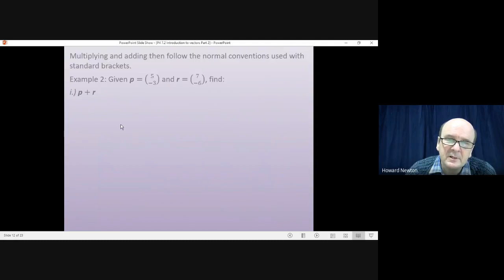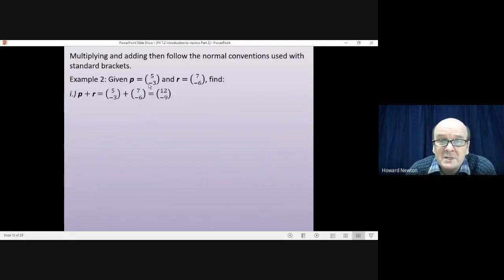Okay, let's have a look. So p plus r, first of all. So p plus r, we just do p, the vector 5 minus 3, plus r, the vector 7 minus 6. 5 plus 7 gives us 12. Minus 3 plus minus 6 gives us minus 9.